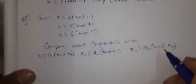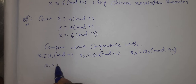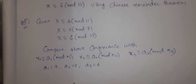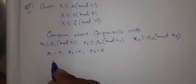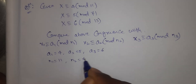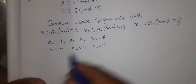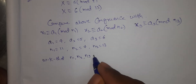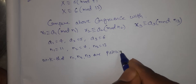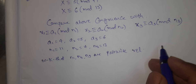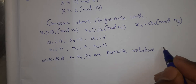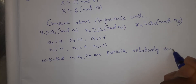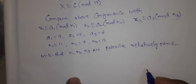So a1 = 4, a2 = 5, a3 = 6. Next, n1 = 11, n2 = 7, n3 = 13. We know that n1, n2, n3 are pairwise relatively prime integers.